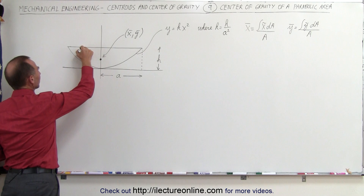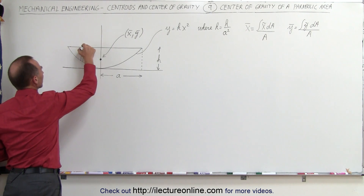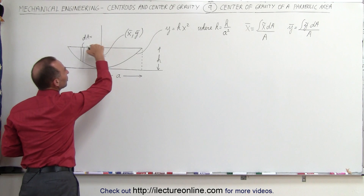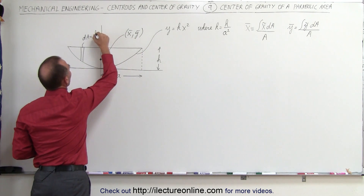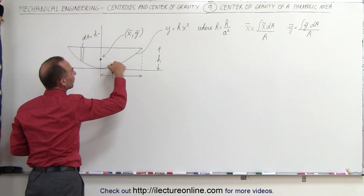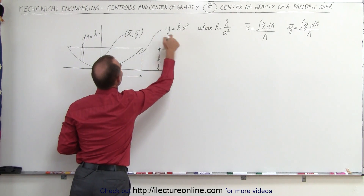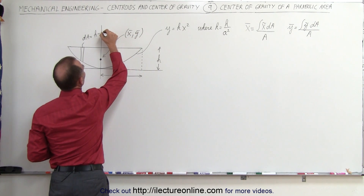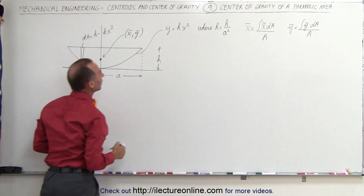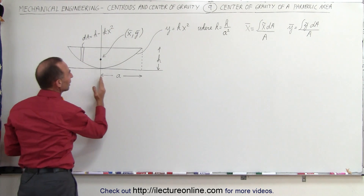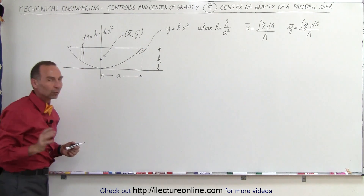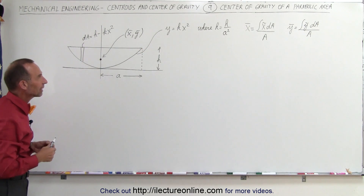Let's first find the area of this region of the parabolic area. What we need to do is find a small dA. That dA is equal to the upper limit h minus the lower limit, which is the parabola y = kx². So dA = (h - kx²), where k is equal to h over a². Notice the width of this region is a and the height is h — that's where the constant k comes from.